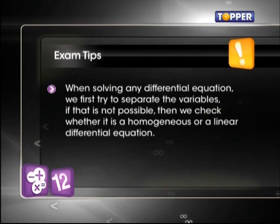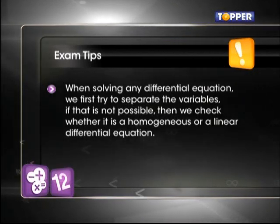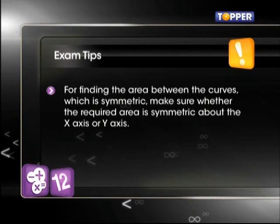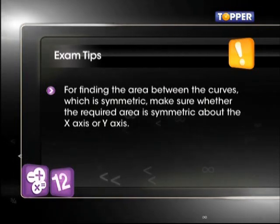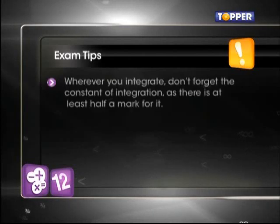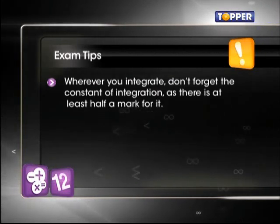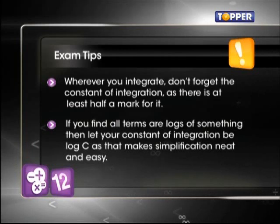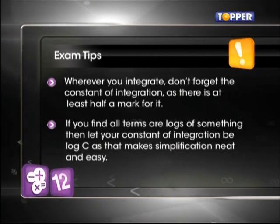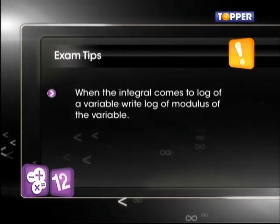I'll leave you now but not before giving you some handy tips. Keep these in mind to avoid any silly mistakes. When solving any differential equation, we first try to separate the variables. If that is not possible then we check whether it is a homogeneous or a linear differential equation. For finding the area between the curves which is symmetric, make sure whether the required area is symmetric about the x-axis or y-axis. Wherever you integrate, don't forget the constant of integration as there is at least half a mark for it. You will find all terms are logs of something then let your constant of integration be log c as that makes simplification neat and easy. And when your integral comes to log of a term, please write log of modulus of that term.